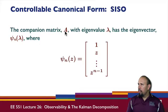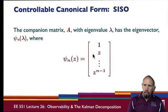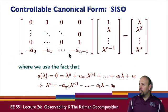So the companion matrix, if it has an eigenvalue lambda, its eigenvector is of this form where z is equal to lambda. So if you actually multiply it out, you take this matrix and multiply it out.